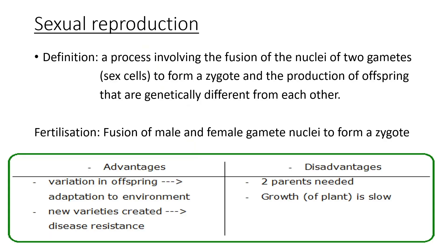The next part is sexual reproduction. This is the process involving the fusion of the nuclei of two gametes — sex cells — to form a zygote, producing offspring that are genetically different from each other. So asexual produces identical offspring, while sexual reproduction produces different ones. The advantages include genetic variation, easier adaptation to the environment, more varieties, and disease resistance. The disadvantage is that you need two parents and growth rate is lower.